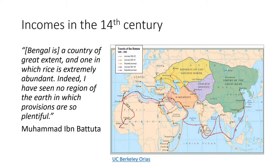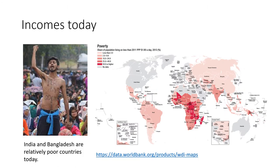In the 14th century, Muhammad Ibn Battuta traveled much of the known world. When he reached Bengal, he wrote that Bengal is a country of great extent and one in which rice is extremely abundant. I have seen no region of the earth in which provisions are so plentiful. Today, the incomes in Bengal — both India and Bangladesh — are some of the lowest in the world.